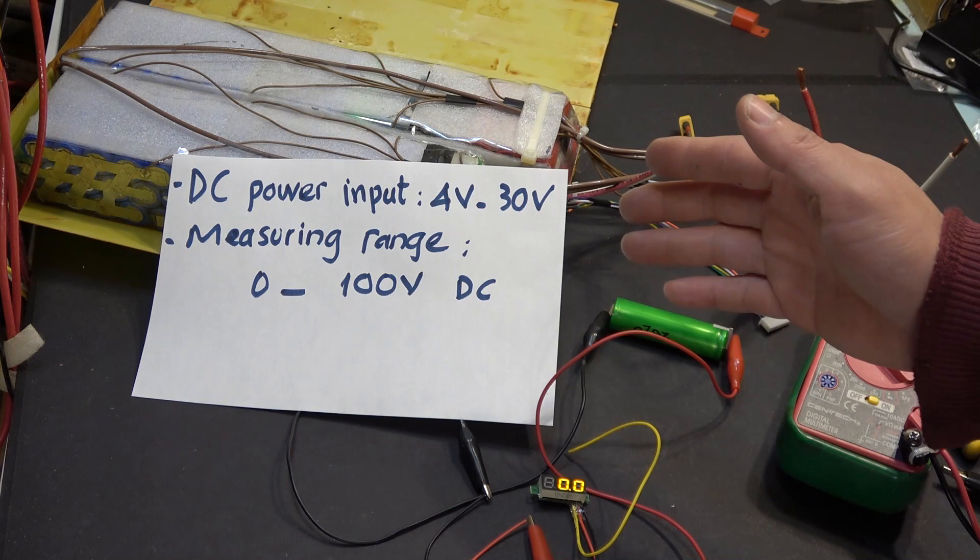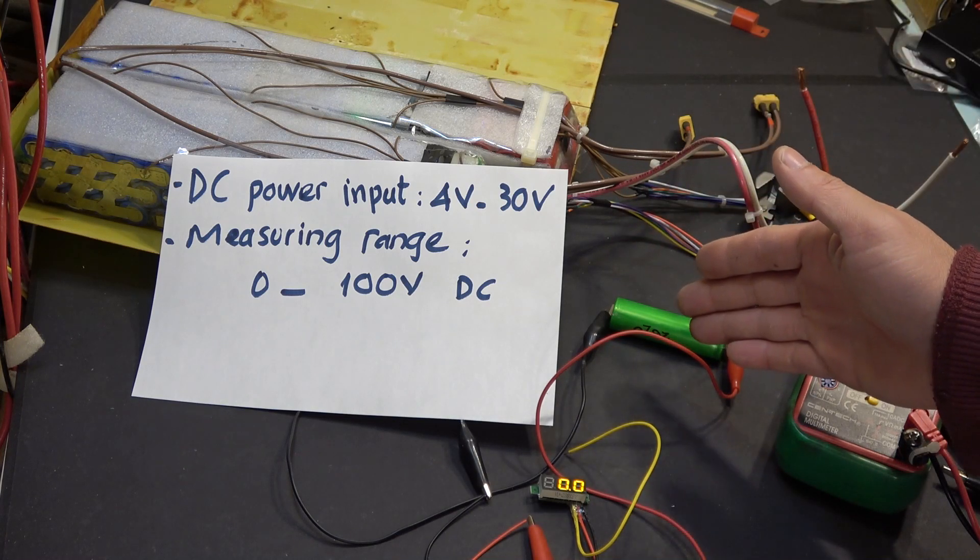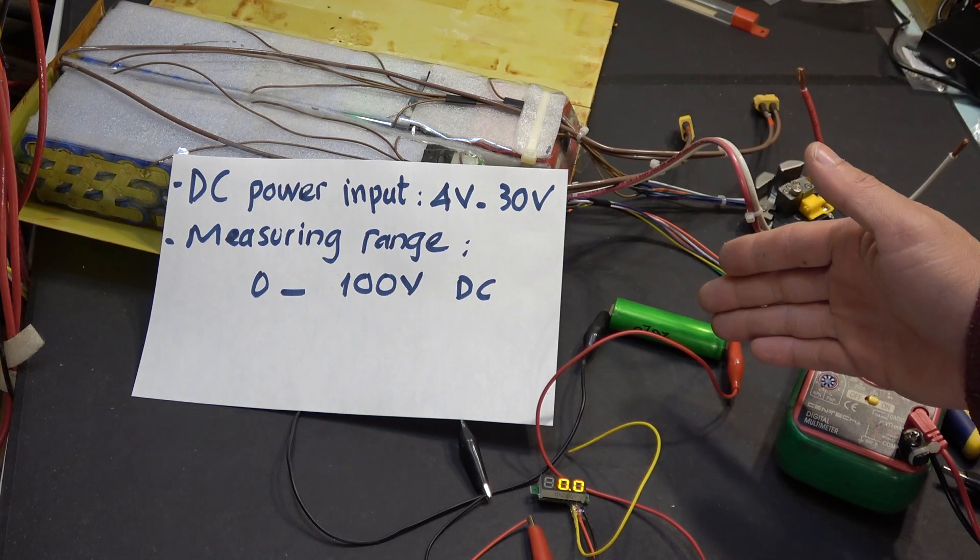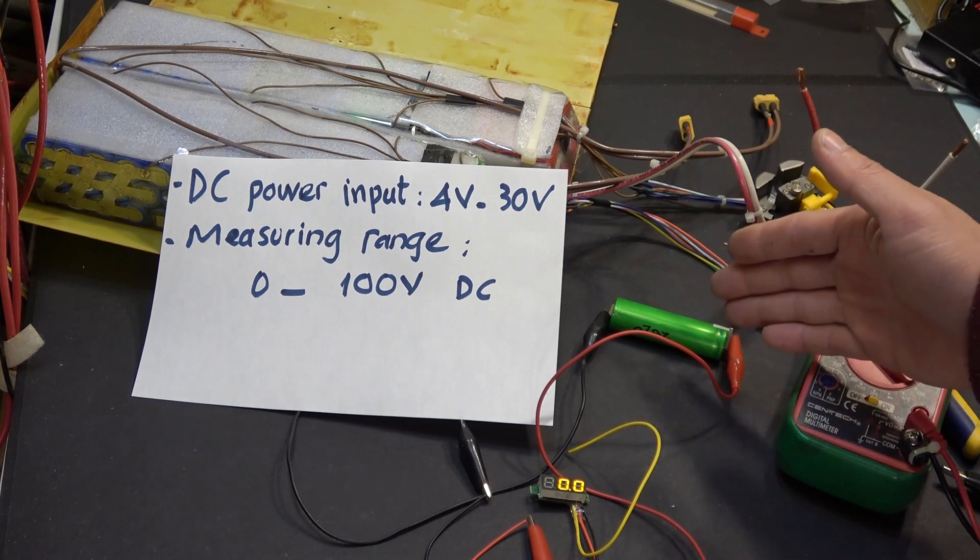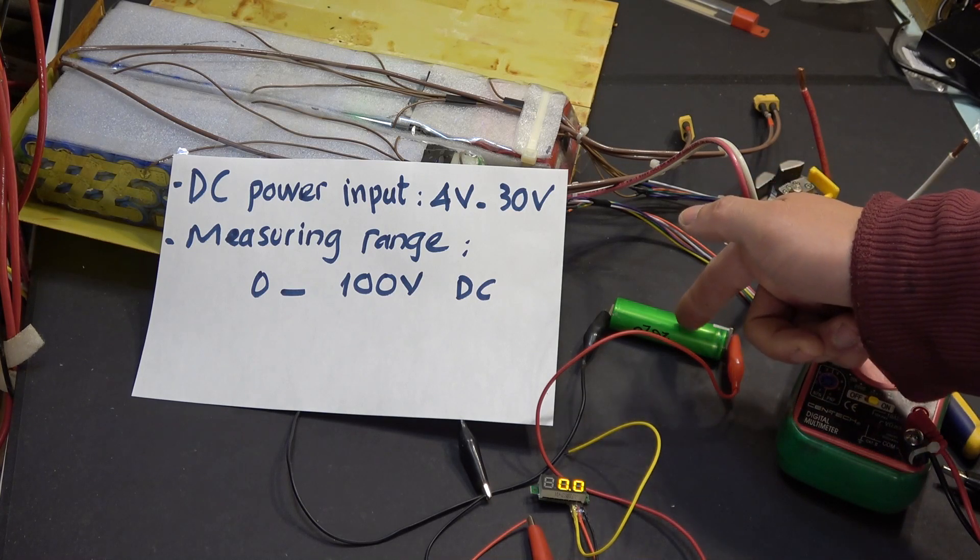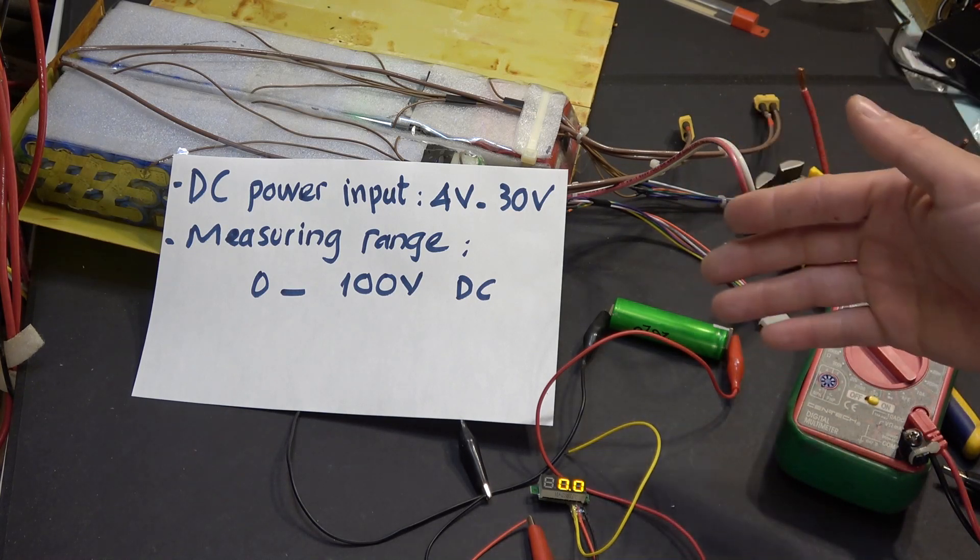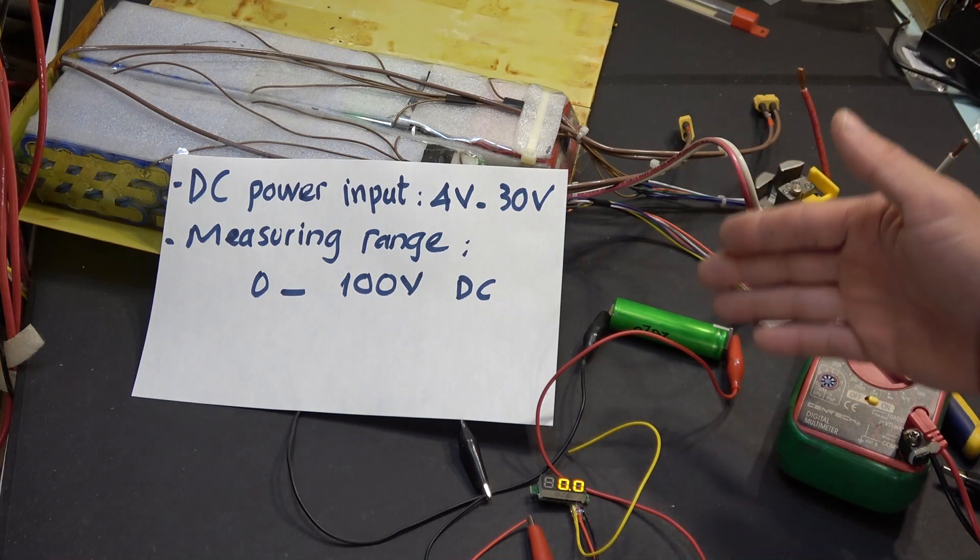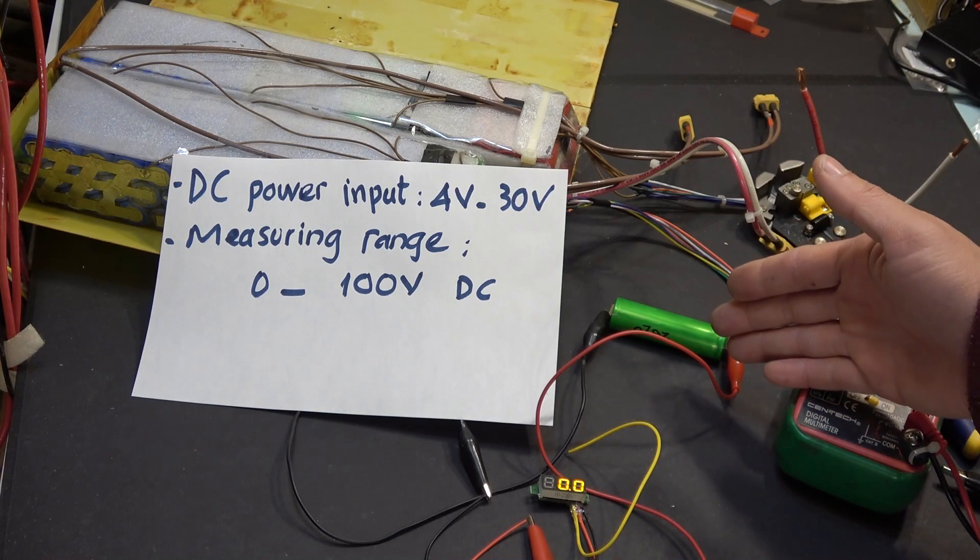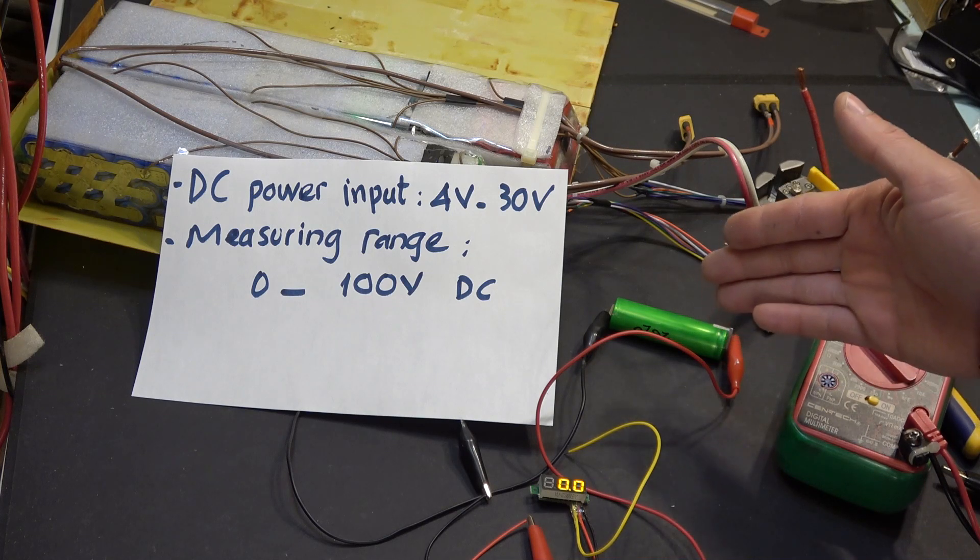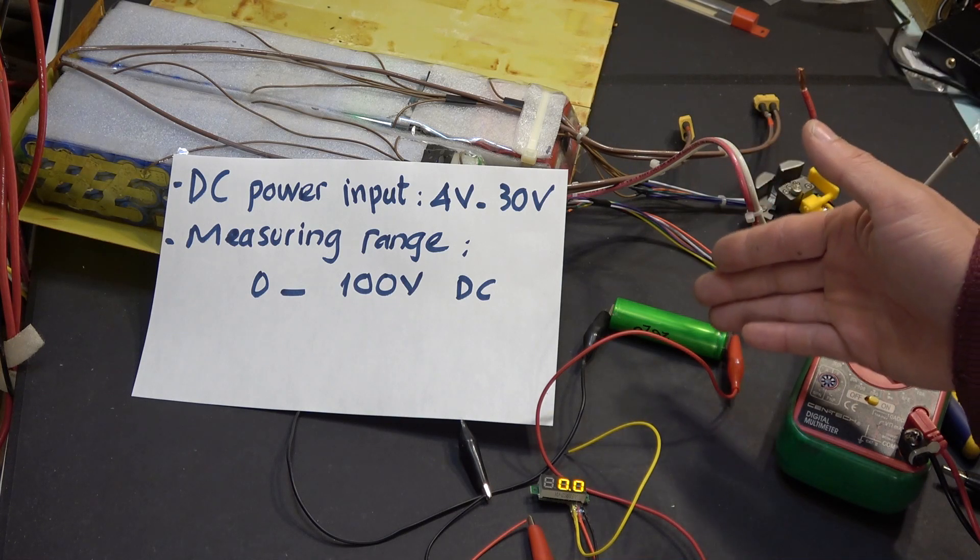What that means is that if you have a battery that you need to monitor and its voltage is less than 30 volts, like this one I have here, then you do not need an external power source to run the unit. It will use its own power source from the battery and display the battery voltage at the same time.